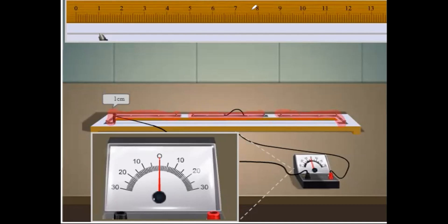Now, because of three metal strips, two gaps are found here. This is one gap and this is another gap. To start the experiment, in one of the gaps we place a resistance box.